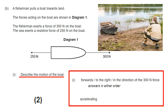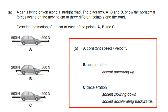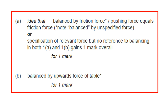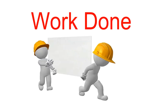Exam example: a fisherman pulling a boat with 300 N against 250 N resistance — the boat moves forward and is accelerating because the forces are unbalanced. The pushing force does not move a brick because it's balanced by friction — resultant force is zero. The brick doesn't move downward because the table's upward force balances the weight.